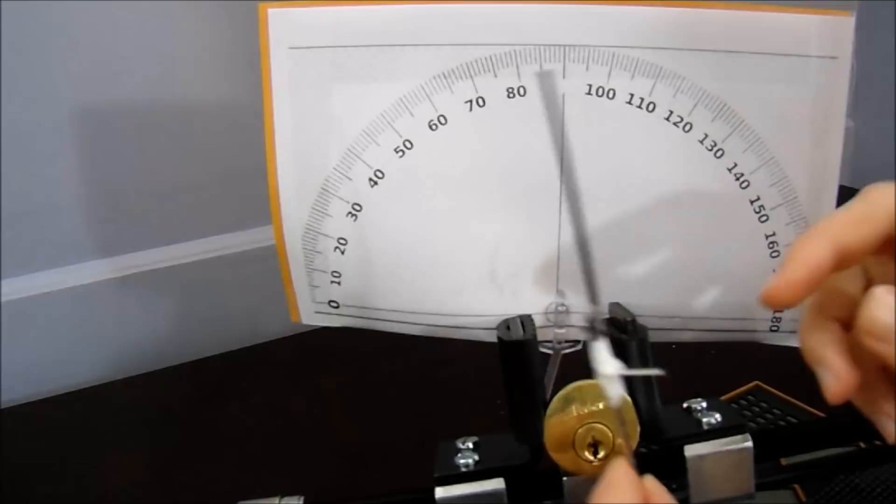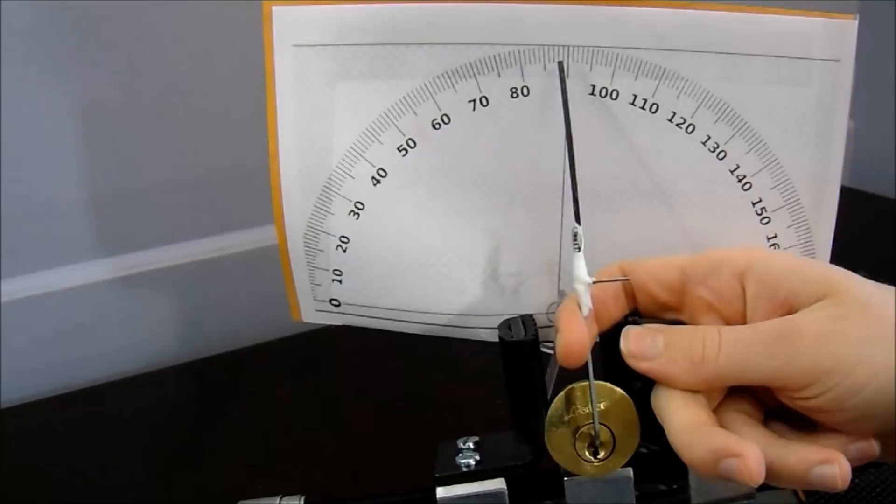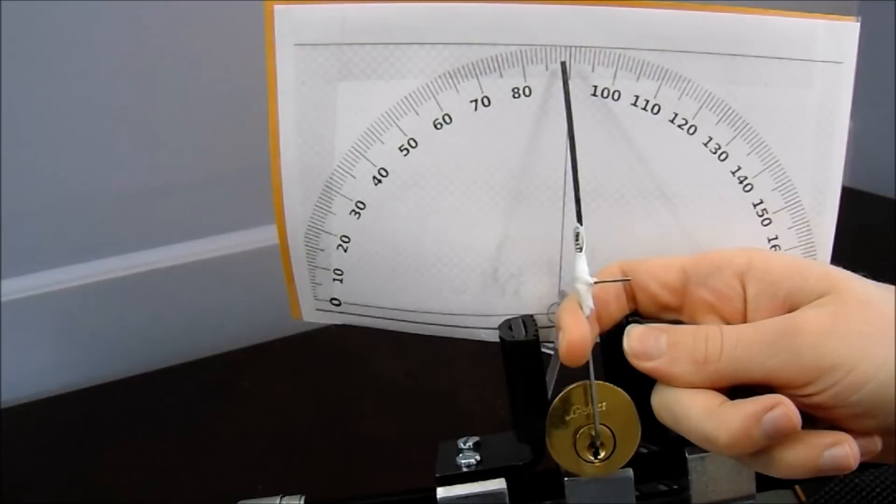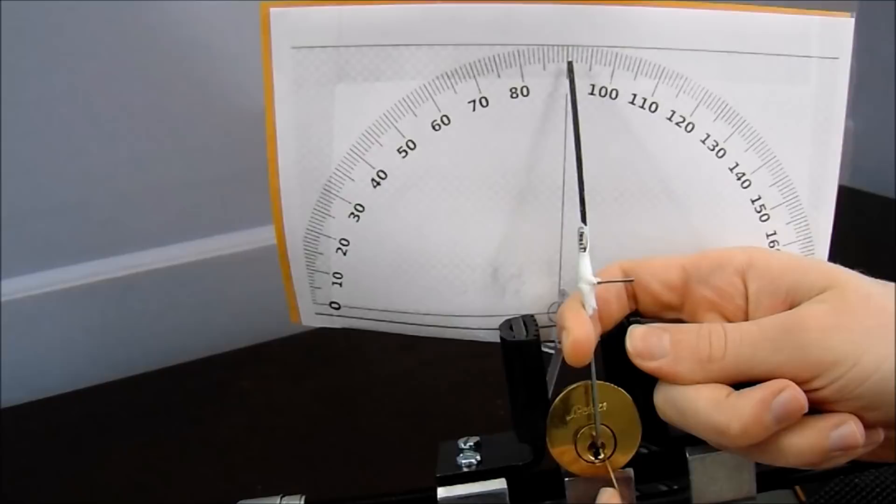What I have done is I have paired up a top of the keyway tensioner with a little bit of an extension so we can see where the neutral area is on this lock, which is right between 85 and 90 degrees. We're going to use this protractor to help us navigate through our first false set. So I'm going to start trying to pick this lock to shear.